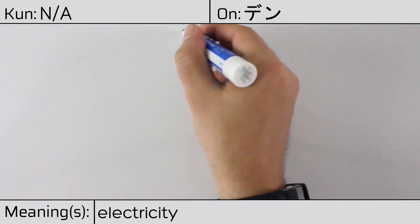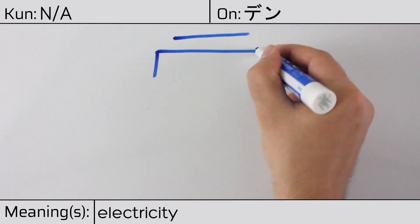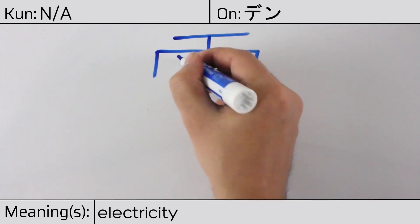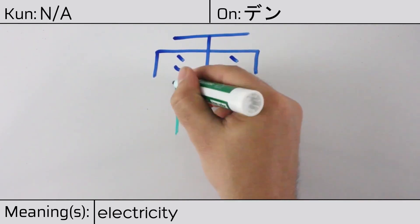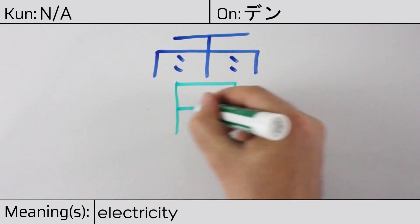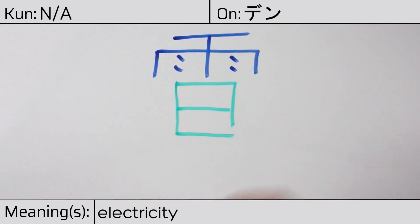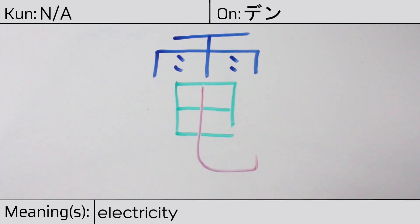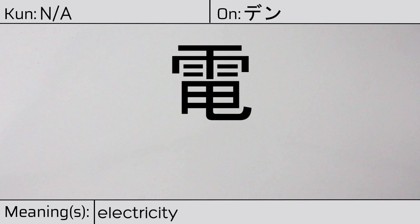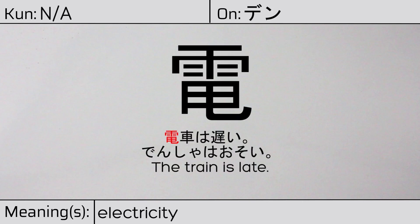This character is made up of the following radicals or parts: rain ame at the top, followed by a hook radical. You can remember this kanji by the following hint: like a dragon's tail during a rainstorm. Our example sentence is: Densha wa osoi — The train is late.